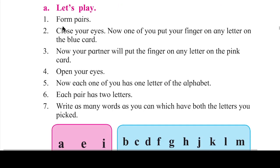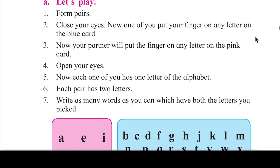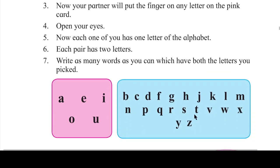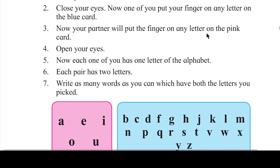Let's play. Form pairs. If you have 20 children, you can make pairs. Close your eyes. Now one of you put your finger on any letter on the blue card. Your partner will put the finger on any letter on the pink card.